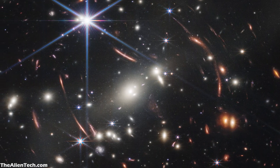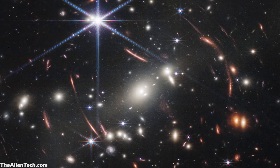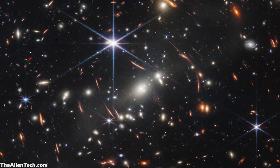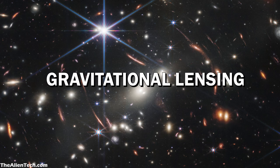We will be able to see such beautiful images of space very often. In this image, you can see the different colored images of the stars and galaxies. The redder the galaxy or star looks, the farther it is. If you see parts where the images are distorted, it is actually an image of a galaxy. This distortion is happening because of gravitational lensing.